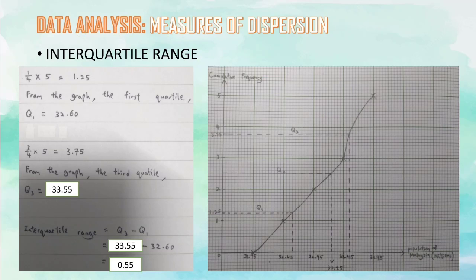We also find the interquartile range. The first quarter is 32.6 million, the second quarter is 33.25 million, and the third quarter is 33.55 million. The interquartile range is the third quarter minus the first quarter, which is 0.55 million.